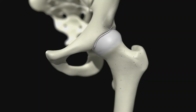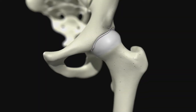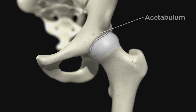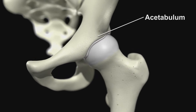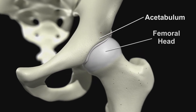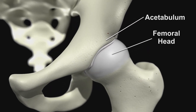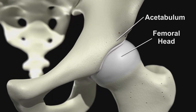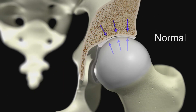The hip is a ball and socket joint. The socket is part of the pelvis and called the acetabulum, and the ball is the head or upper part of the femur. In the normal hip, the acetabulum covers the head of the femur and forces are distributed evenly throughout the joint.